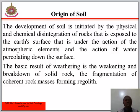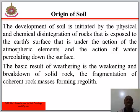Origin of Soil. The development of soil is initiated by the physical and chemical disintegration of rocks exposed to the earth's surface, under the action of atmospheric elements and the action of water percolating down the surface. The basic result of weathering is the weakening and breakdown of solid rock, the fragmentation of coherent rock masses forming regoliths. Normally, regoliths have a good gradation of particle sizes with the largest and least fragmented pieces at the bottom.